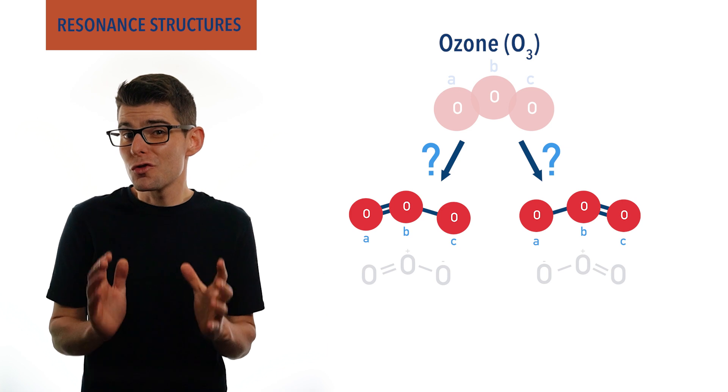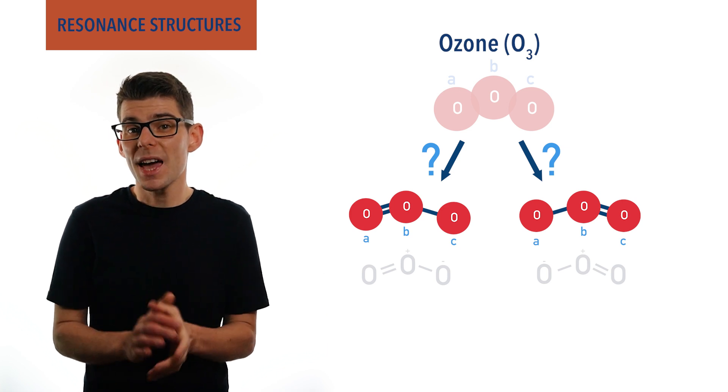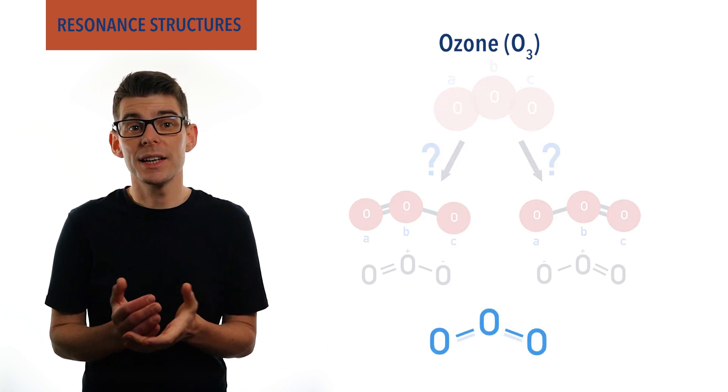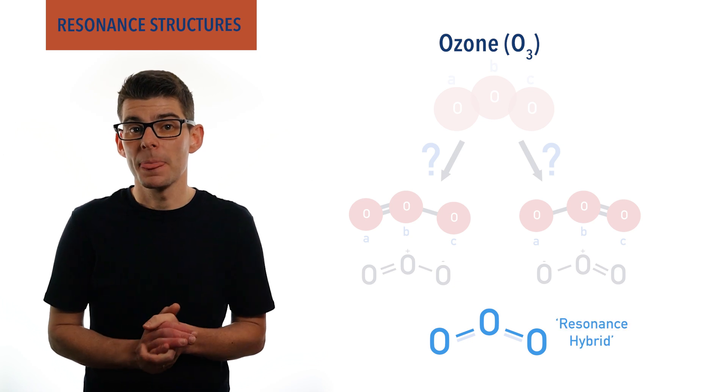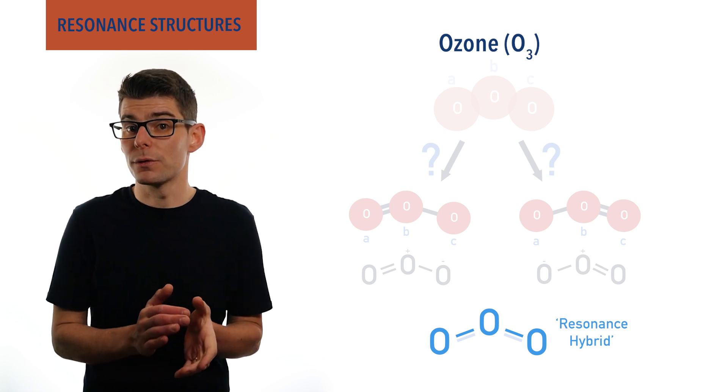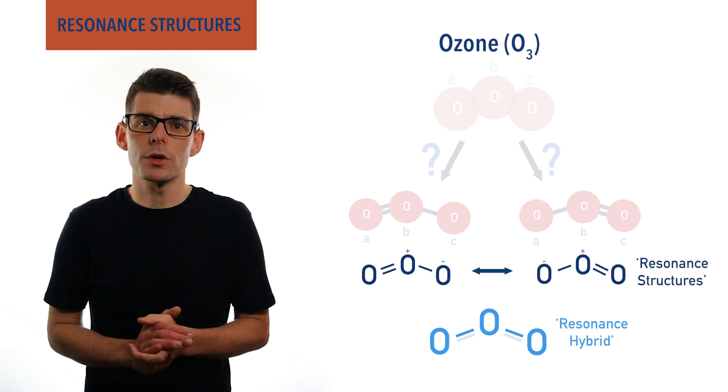The actual true structure that will exist will be a hybrid of the two, and is referred to as a resonance hybrid. And the two possible structures we've drawn are called resonance structures.